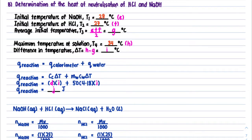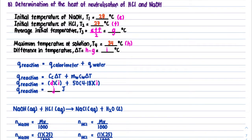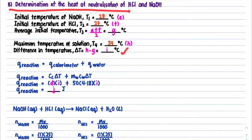After stirring the mixed solution, record the maximum temperature, which is 34 degrees Celsius. You can see the temperature increases from about 27–28 degrees to 34 degrees. This is because the enthalpy of neutralization is a heat-releasing reaction and one mole of water is formed. The ΔT for Part B is the maximum temperature minus the average initial temperature (bigger value minus smaller value).